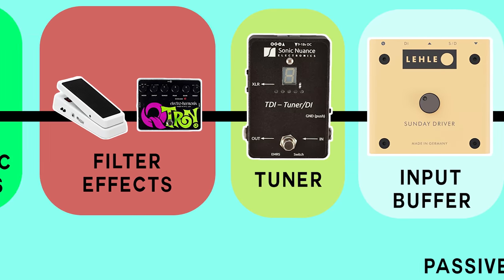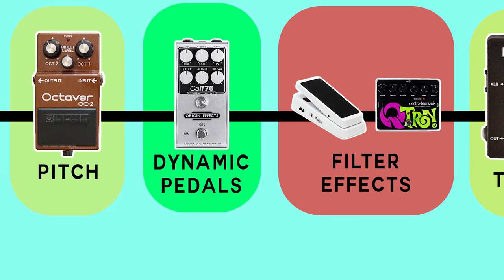After dynamic pedals I think the best thing to go into next is pitch — the classic Boss OC-2 octave is great for this. We're still keeping this relatively close to the bass instrument. These also like the dynamic pedals and filter pedals work better and trigger better the closer they are to the instrument, so you'll get better tracking of the octave. Some people do like to use this after overdrive, but some of this is personal taste based on what the sound is and what you're going for.